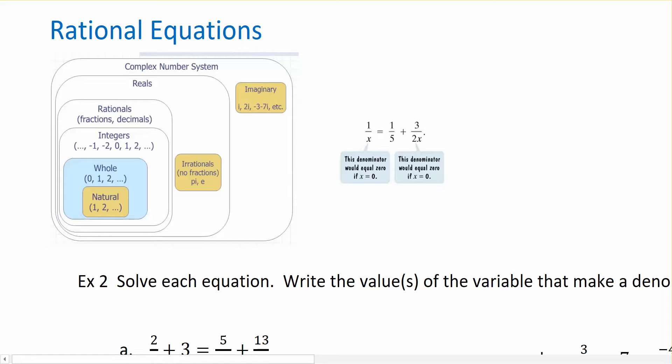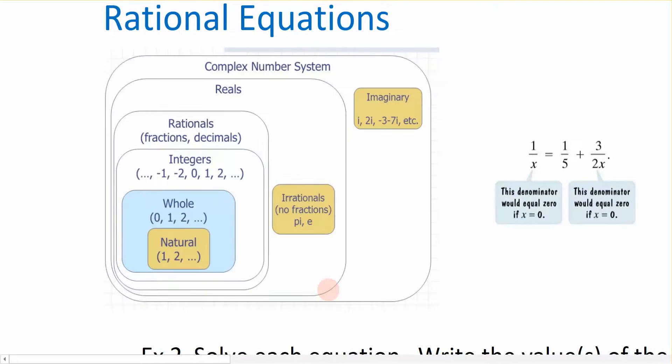Before we get too far into that, let me just remind you what it means when I say the word rational. Our number system is comprised of all sorts of classifications. We start out by talking about natural numbers, those are the ones that we can count on our fingers. Then we added in the number zero, that gave me whole numbers. We then moved into the idea that I needed to represent positive and negative whole numbers, and that gave me integers.